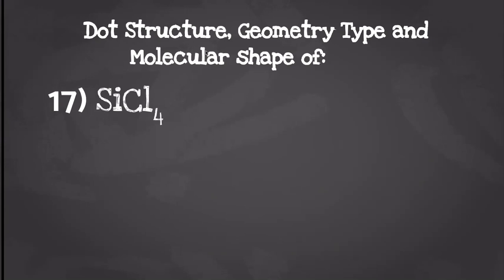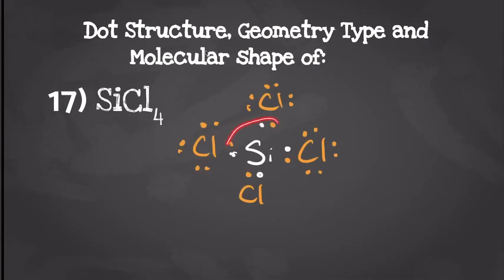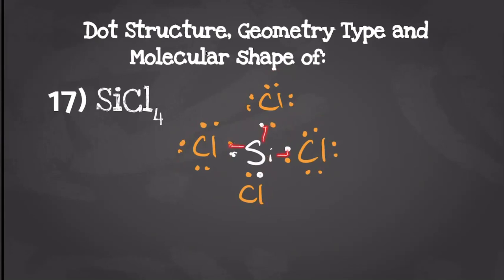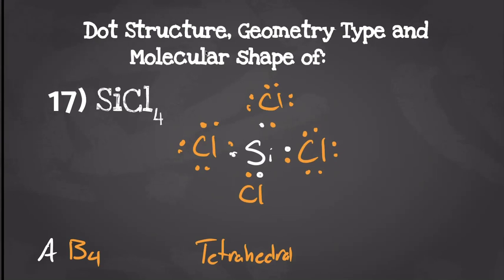For our next one we have silicon tetrachloride. Silicon is going to have four valence electrons and each chlorine is going to have seven valence electrons, so when we draw out our dot structure it should look something like this. Silicon is going to have eight valence electrons and each chlorine is going to have eight. We have one center molecule attached to four other things, giving us a geometry type of AB4, which gives us a molecular shape of tetrahedral. Just like the other tetrahedral examples we've covered, the orientation of our atoms allows the electronegativities to cancel, which gives us a non-polar molecule.